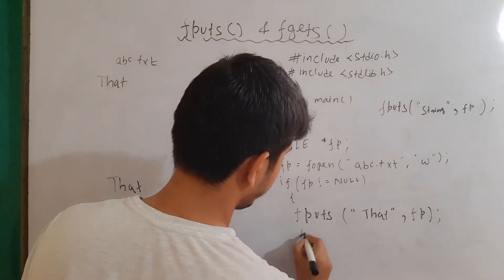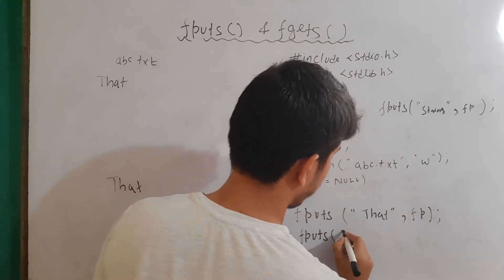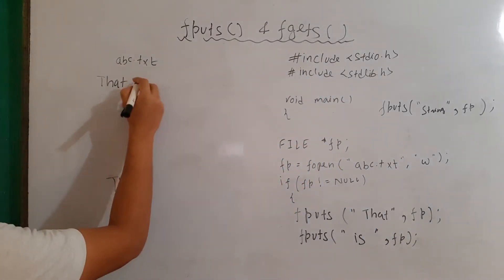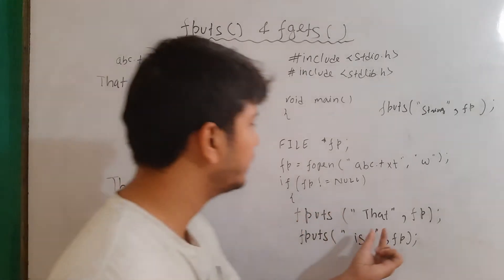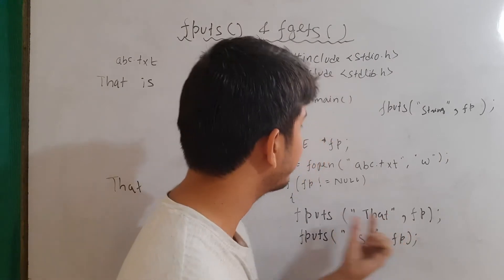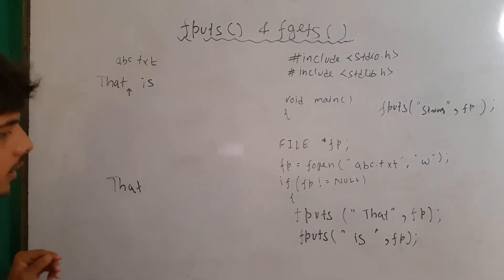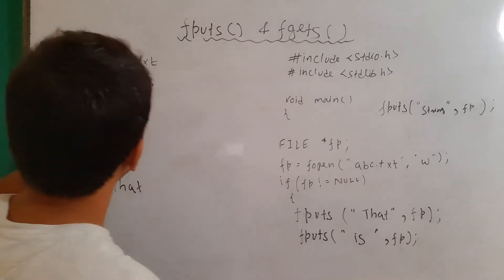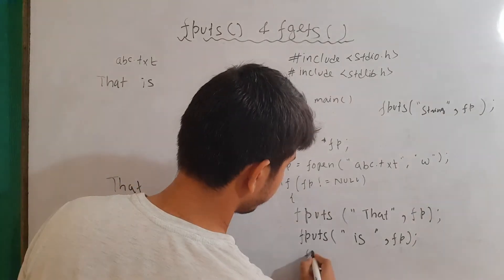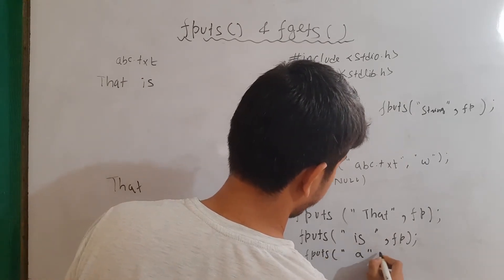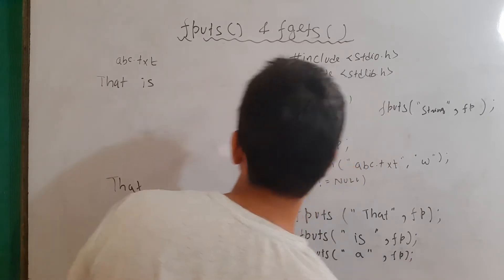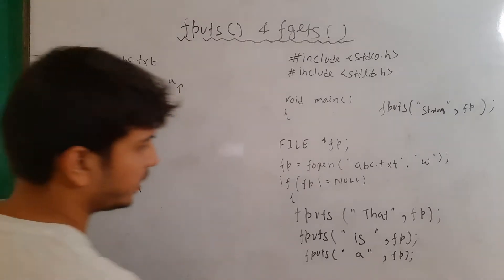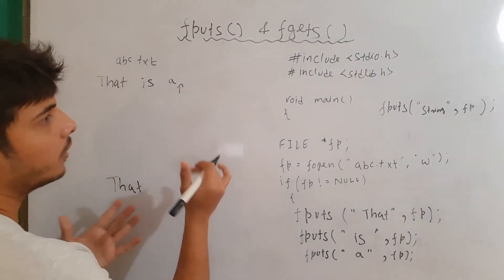Let's say I want to write 'that' to this file. I can write here fputs, then the string 'that', and then the file pointer fp. So when I execute this program, 'that' will be written to the file. Similarly, if I want to write another string, I can write fputs then ' is', and then fp. After writing the content, the fp starts pointing to the next location. When I write fputs again, it writes from that location. So fputs with ' a' and fp will write ' a', and fp will point to the next location. This is how we write contents using the fputs function.